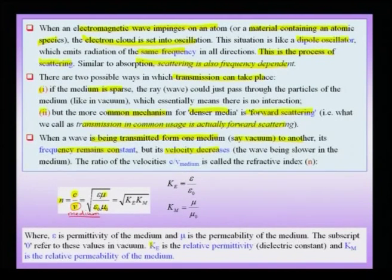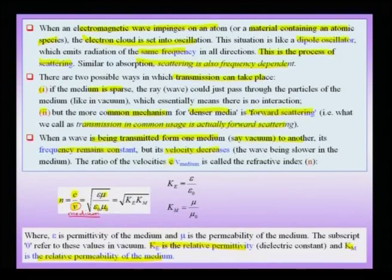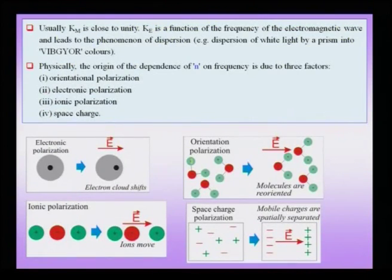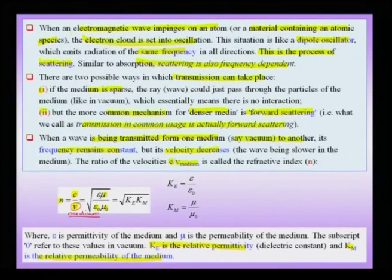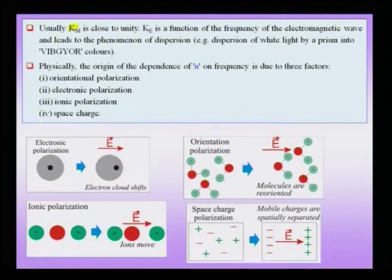The refractive index depends on the relative permittivity and relative permeability of the medium. The relative magnetic permeability K_m is actually close to unity, so K_e — the relative permittivity — is what essentially determines the refractive index. This K_e is a function of the frequency of the electromagnetic wave, and this is what is responsible for the phenomenon of dispersion — referring to Newton's experiment where white light sent into a prism spreads into VIBGYOR colors.